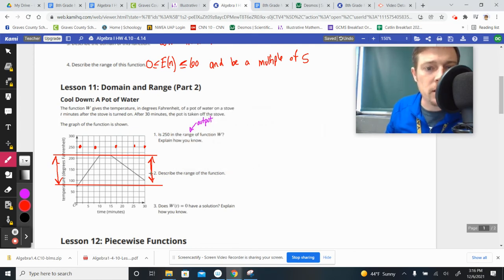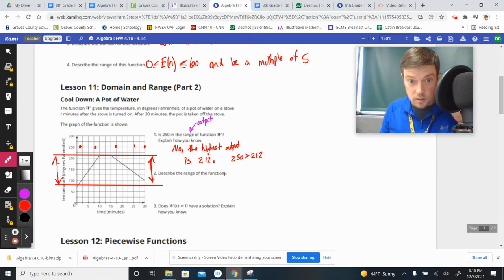So that range there is not in there. So 250 in the range of function W? No, the highest output is 212, and 250 is greater than 212. You could say something like that. So it's out of our range.